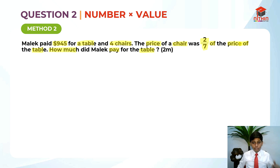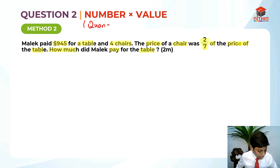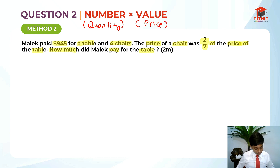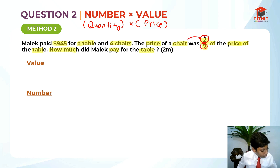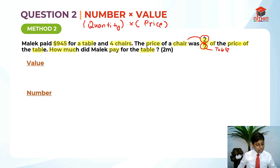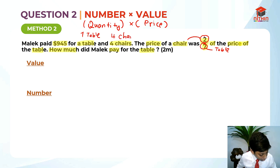First step into solving number times value, we should always list the ratio of number and the ratio of value. Number means the quantity, and value means the price in this context — so quantity times price. We list down value and number. We know that the value is: 1 chair means 2 units and 1 table means 7 units. For the number, Malik only bought 1 table and 4 chairs. This is the number — 4 chairs and 1 table.